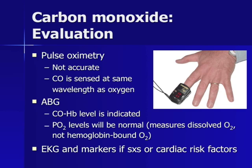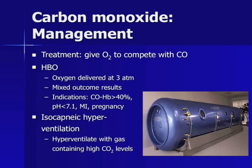Further evaluation of carbon monoxide poisoning should include EKG and cardiac markers if there are symptoms or risk factors for acute coronary syndrome. The treatment is to give high levels of oxygen to compete for hemoglobin binding sites. For mild poisonings, 100% oxygen via non-rebreather is sufficient. For severe poisonings, 100% FiO2 delivered via an endotracheal tube and ventilator is indicated. Hyperbaric oxygen therapy may be considered in certain circumstances, such as with pregnant patients, acidosis, MI, or extremely high carboxyhemoglobin levels.